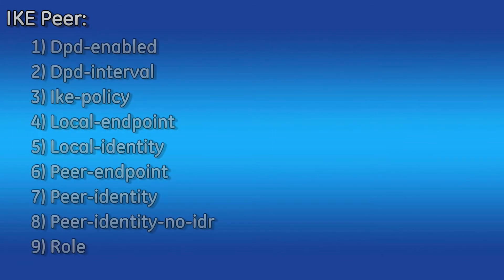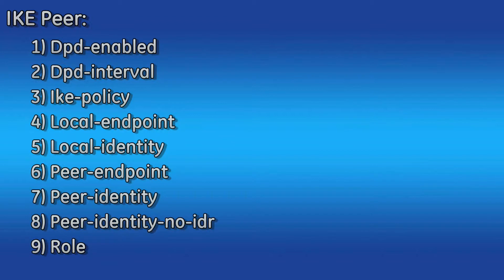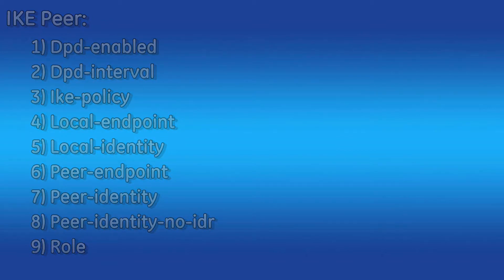Now let's move on to the IKE peer setting. After you give the IKE peer a name, it consists of the following parameters: DPD enabled, DPD interval, IKE policy, local endpoint, local identity, peer endpoint, peer identity, peer identity no IDR, and role.